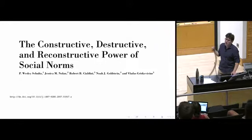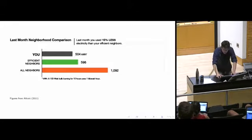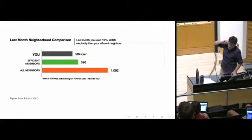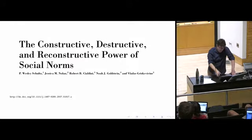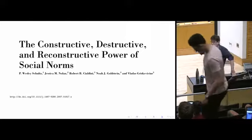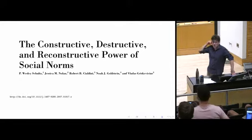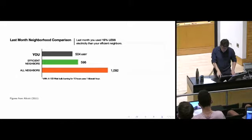A great example illustrating careful thinking about understanding and how it helps optimization is the paper about the constructive, destructive, and reconstructive power of social norms by Schultz. They were interested in encouraging people to lower their energy consumption, so they showed people their consumption relative to their efficient neighbors and all their neighbors. This started in a paper in 2007, and the results were so impressive that companies were created to industrialize this treatment — now it's widely deployed.